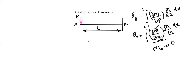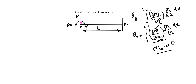Castigliano's theorem gets a little modified at points where no external load or moment is acting. At those points, we modify the approach: we assume that there is a moment MA acting at A — this is our supposition. We can take it clockwise or anticlockwise; that is our choice. But in the real system, MA is not acting at point A — only P is acting there.